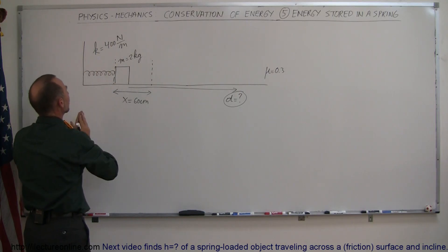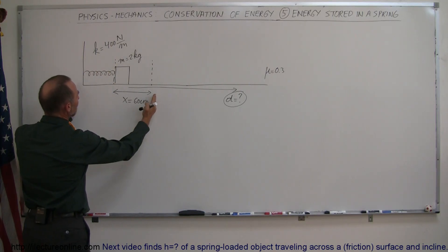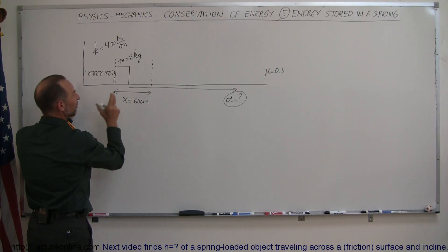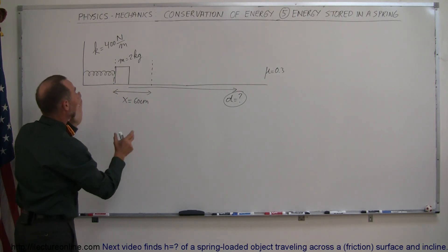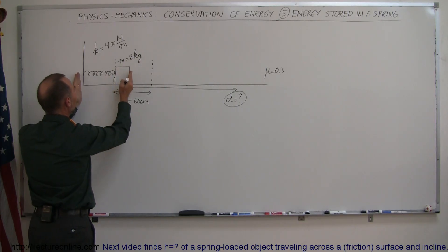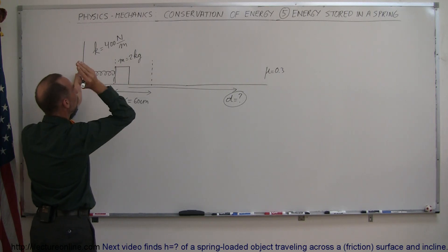We have a spring of spring constant 400 newtons per meter and we've compressed it a distance of 60 centimeters. Then we put a block in front of the spring with a mass of 2 kilograms. We'll hold it in place and then we'll let go.